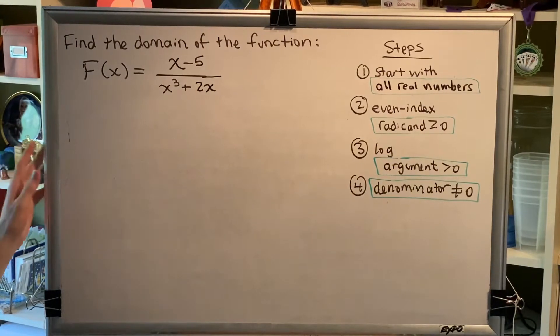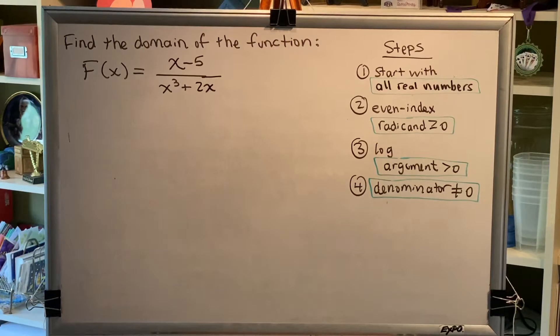Find the domain of the function F(x) equals x minus 5 all divided by x cubed plus 2x.